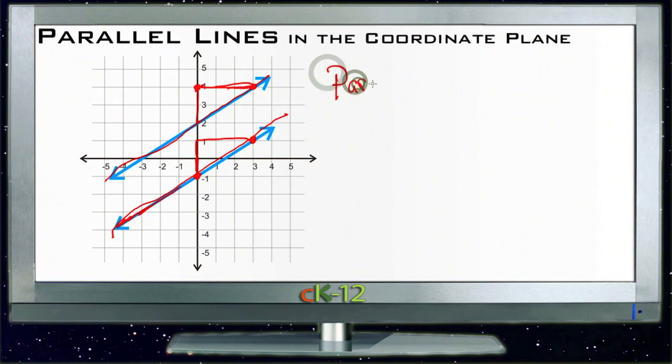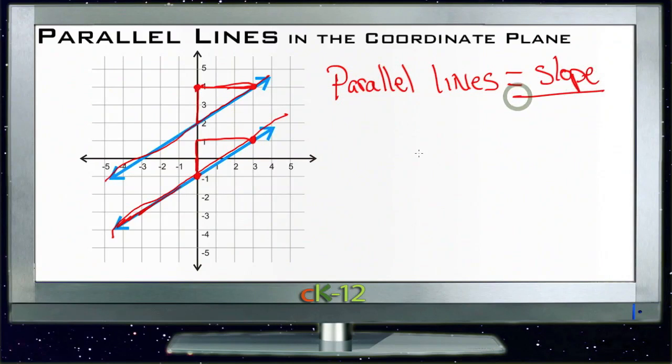So that tells us that parallel lines always have an equal slope. Their slopes are always the same. That tells us that if we know the slope of one, we can find the slope of the other. Or, if we need to find a line that's parallel to one that we have, all we need to do is move up or down the y-axis right here and then use the same slope to find another line.